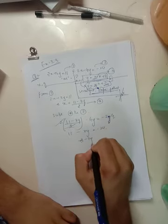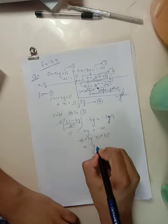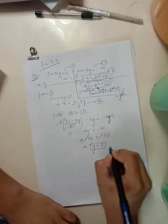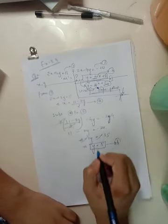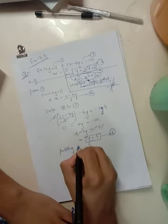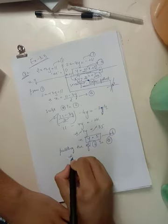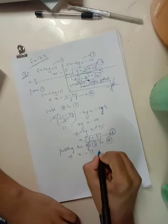This is minus 24. So solving it further we have 11 minus 7y equals minus 24. Transposing it to that side we have minus 7y equals minus 35. Minus and minus cancels, y equals 5 if I call it b.